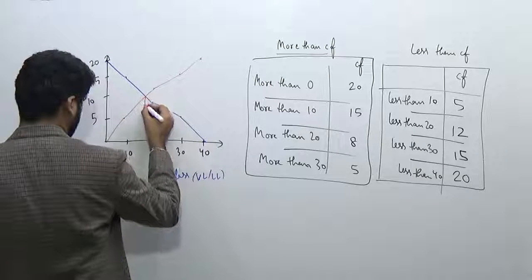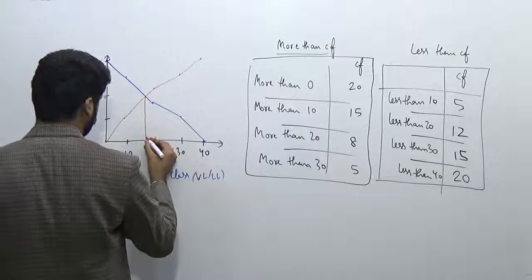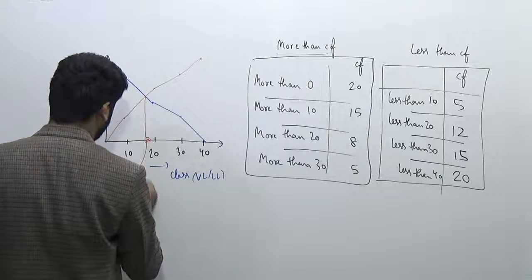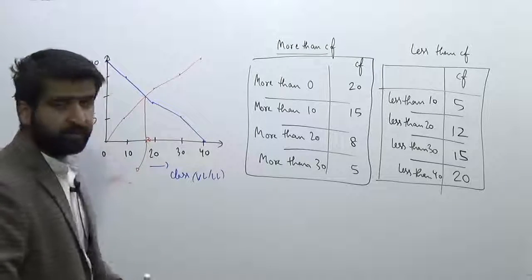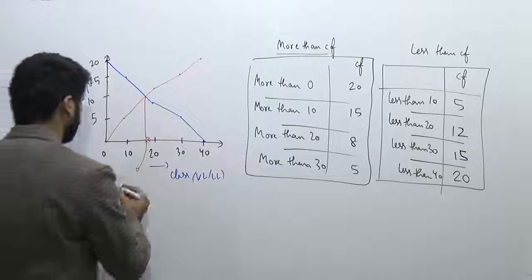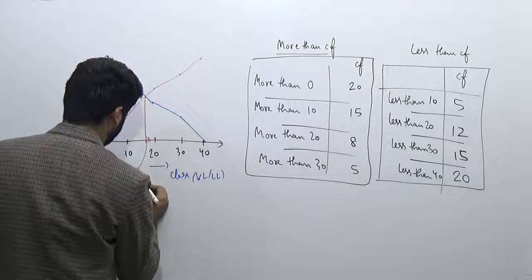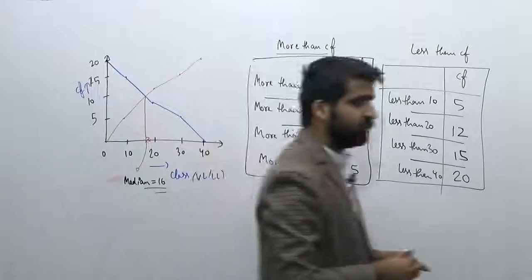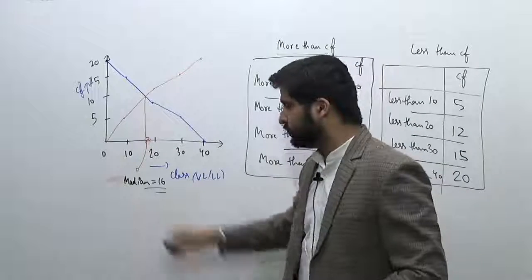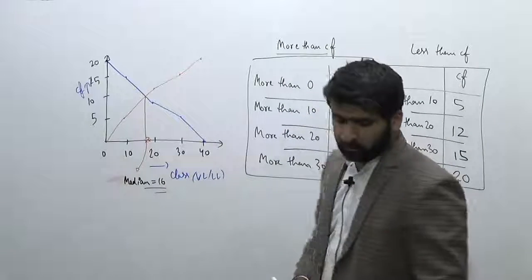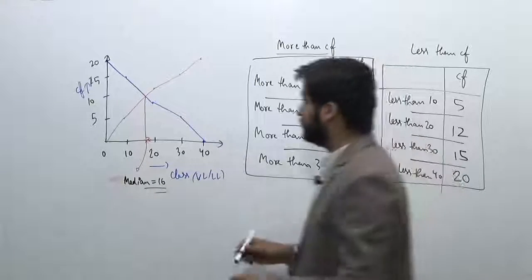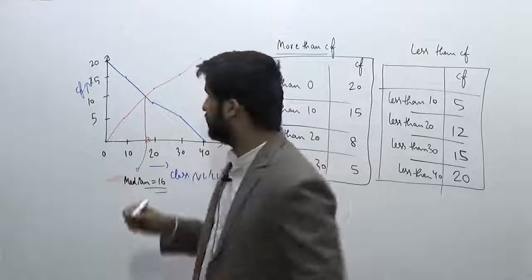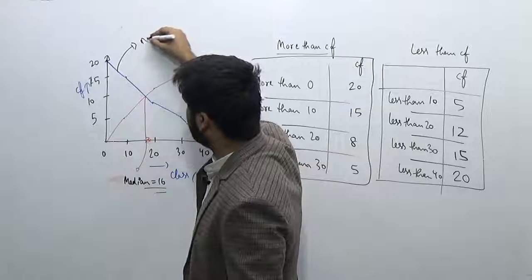The point of intersection of these two curves gives the median. If I drop a perpendicular from the intersection point to the x-axis, that value gives the median — coming out to approximately 16 or 17. This is not a very accurate graph; on graph paper you'll get exact values, and the median will come out as around 16.